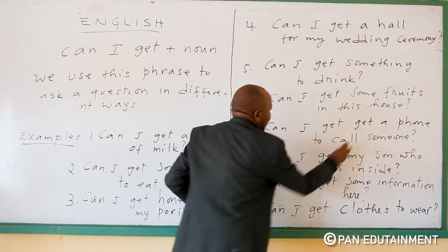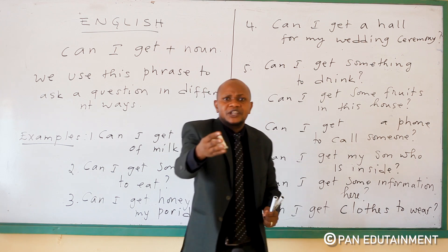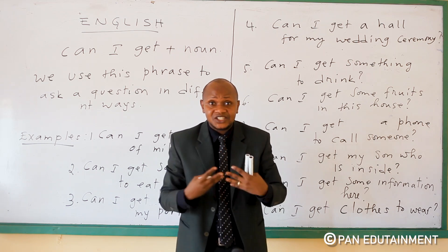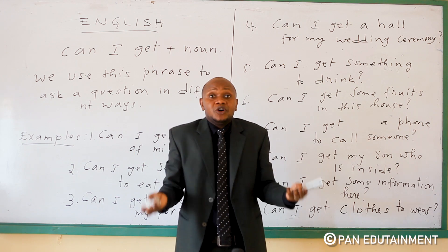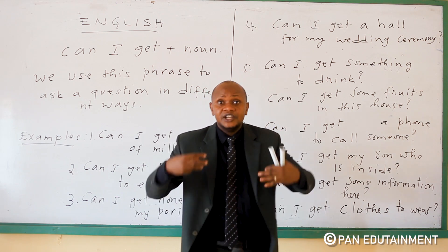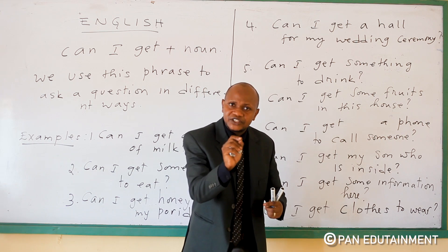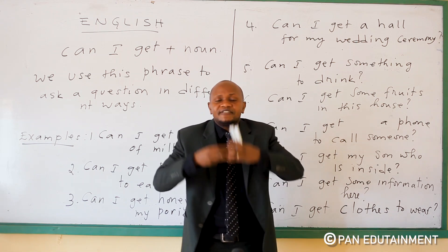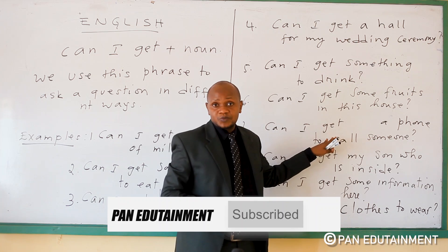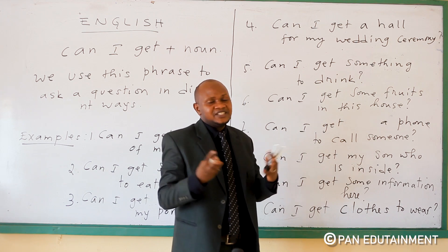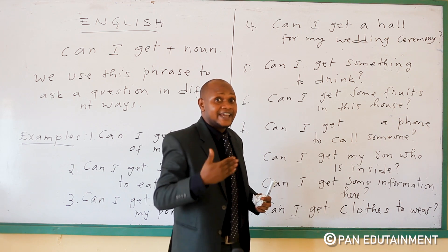Number seven: can I get a phone to call someone? For example, I ask my cameraman — can I get a phone or a telephone to call someone? Maybe you are in need of calling someone, you want to call someone, but you don't have a phone. The obstacle is that I don't have a telephone. Then I say, 'Can I get a telephone to call someone?' This is a very good sentence that you will use.